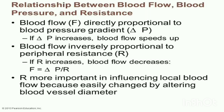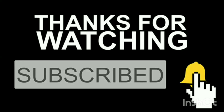Resistance can easily be changed by altering blood vessel diameter. When blood vessels are smaller, resistance is greater. If we increase the diameter of blood vessels, resistance decreases; if diameter decreases, resistance increases. Overall, blood flow is directly proportional to the blood pressure gradient — the greater the pressure difference, the greater the blood flow. Blood flow is inversely proportional to resistance and viscosity: the greater the viscosity or resistance, the lower the blood flow. Flow = ΔP / R.